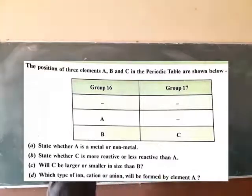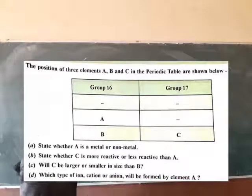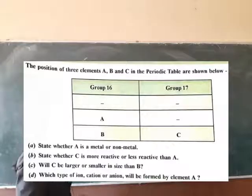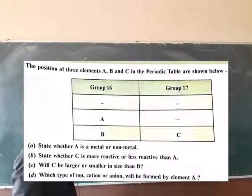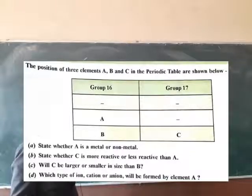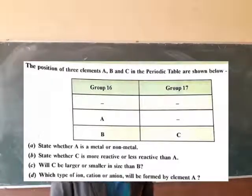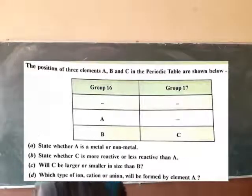This is the periodic table given — group 16 is not the first one, but in the second and third one. We know that A and B are the first two elements. Group 17 के 2 first elements उसने लिखे नहीं हैं, और एक third element C है। So इसमें हमको first — state whether A is a metal or non-metal।